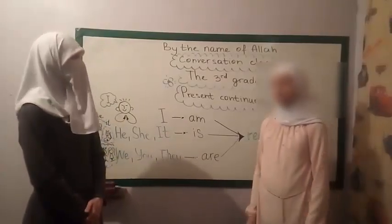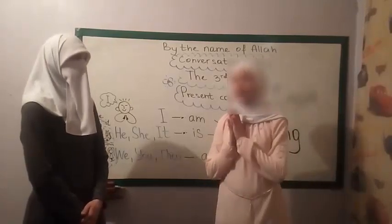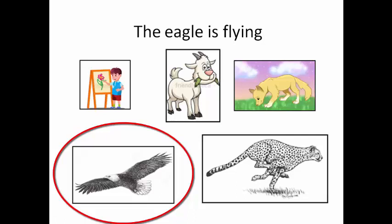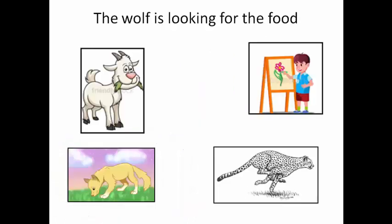And now, Noor, we will make some grammar exercises. الآن رحنا نأخذ التمارين عن القاعدة. Bismillah al-Rahman al-Rahim. And now, my dear, please choose the right picture for the sentence. وهسا يا شطار اختاروا الصورة المناسبة للجمل المكتوبة. The eagle is flying — where is the right picture? Which one? Choose, please. Yes, that's right, this one. The wolf is looking for the food — which one is the right picture? Please choose.